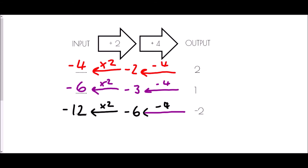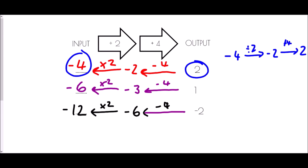If you want to check those answers are correct, try putting them in as the input. If we try negative four: divided by two gives negative two, then add four — negative two plus four is two. That's the output we were given, so our input is correct.